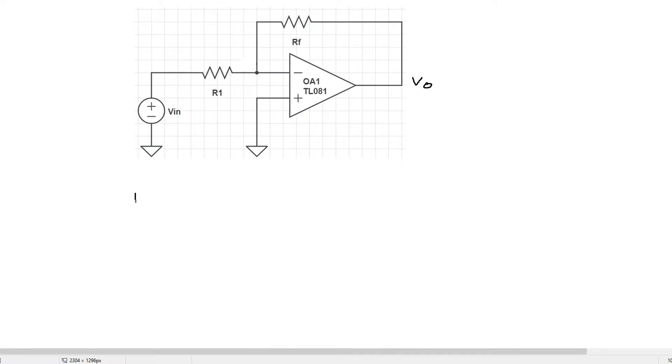Now the transfer function H is defined as output over input. And in this case our output is the voltage measured at the amplifier output and our input is the voltage delivered by our voltage source.